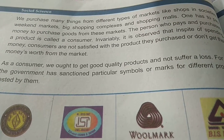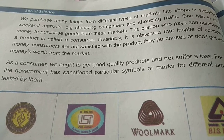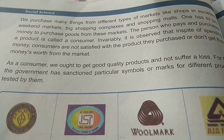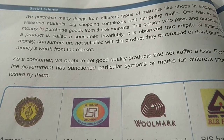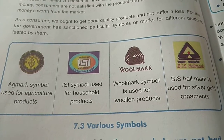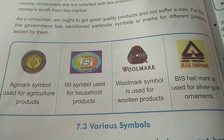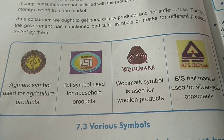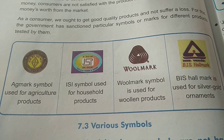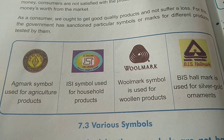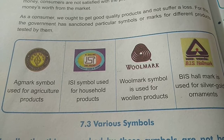Different types of markets are available in our societies from where we buy different things — weekend markets, big shopping malls and complexes. But there are some symbols allotted by the Government of India in order to know the best quality, as a standard set by the government to ensure good quality of products.